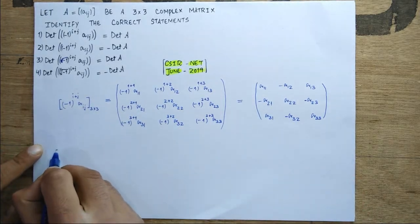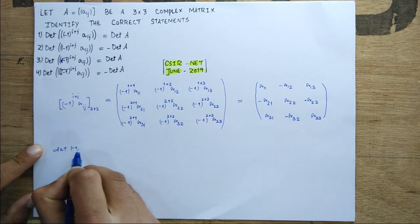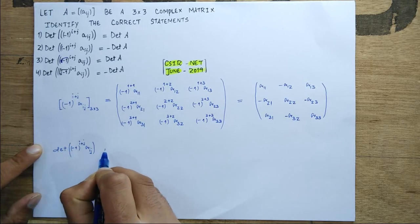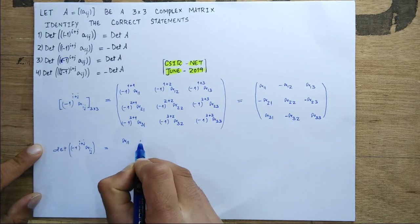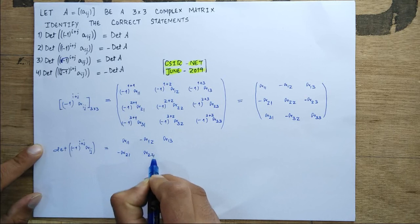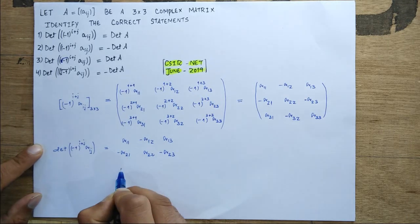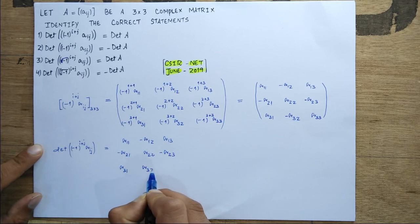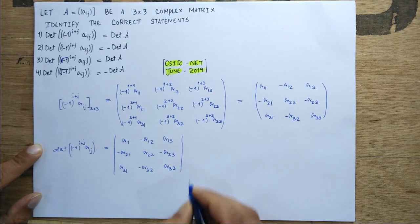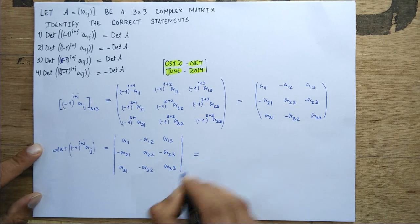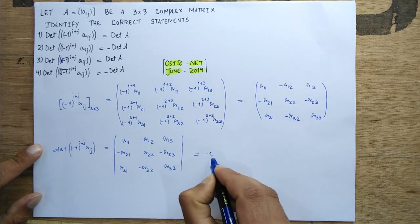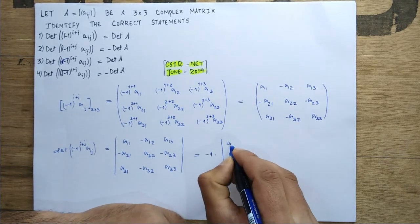Now let us determine the determinant of this matrix (-1)^(i+j) * a_ij. The determinant is of the matrix with entries: a11, -a12, a13 in the first row; -a21, a22, -a23 in the second row; a31, -a32, a33 in the third row. We need to find this determinant.